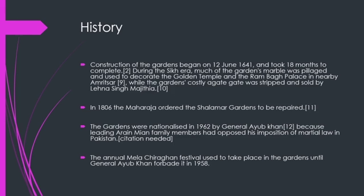In 1806, the Maharaja ordered the Shalimar Gardens to be repaired. The gardens were nationalized in 1962 by General Ayub Khan because leading Ranjit Mia family members had opposed his imposition of martial law in Pakistan. The annual Mela Chiraghan festival used to take place in the gardens until General Ayub Khan forbade it in 1958.